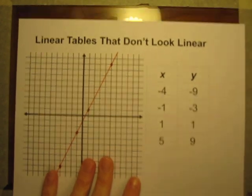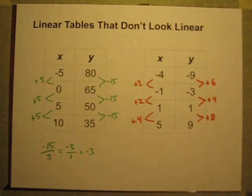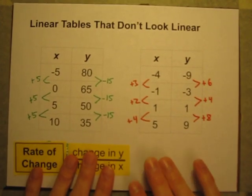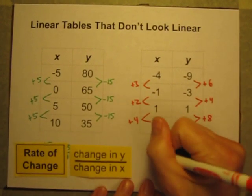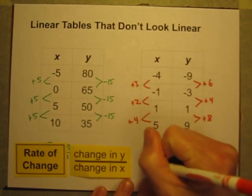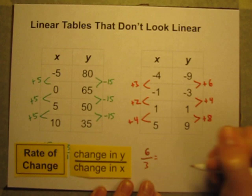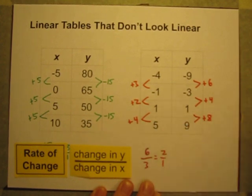So what's going on here? If I go back to this data table and I think back to our definition of rate of change, which is going to be the change in Y values divided by the change in the X values, let's look. I have a change in Y of 6, a change in X of 3. And 6 divided by 3 is 2 over 1. I gain 2 Y's for every X.